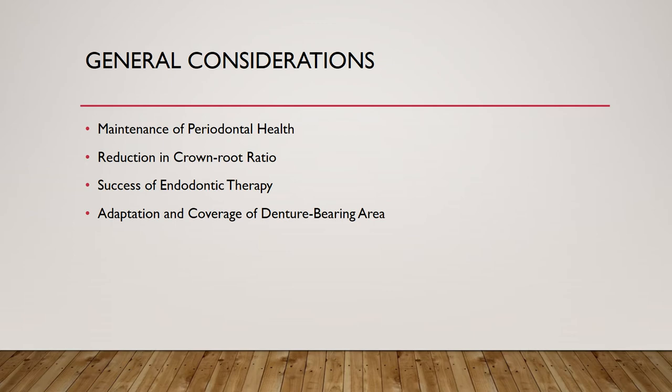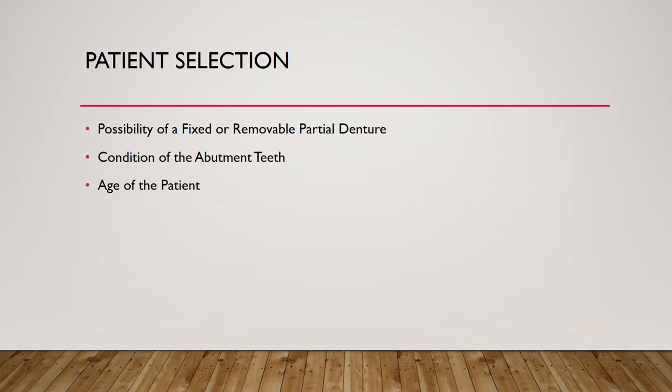Coming to general considerations: we must maintain periodontal health, achieve a reduction in crown-root ratio, ensure the success of endodontic therapy, and adapt and cover the denture-bearing area. The crown is reduced to at least a remaining 2 mm, endodontic therapy is done beforehand, and then the support of that abutment is used to create an overdenture in one of four types.